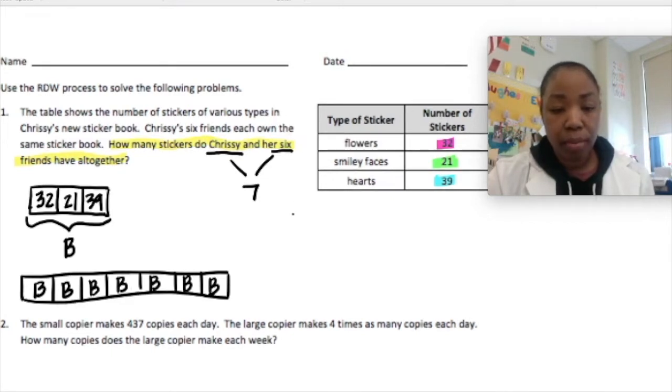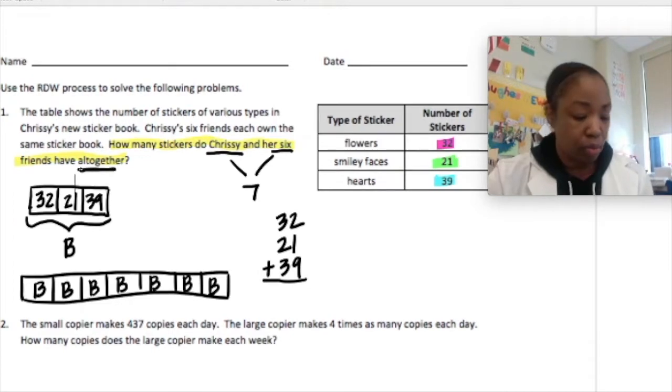So we're going to do whatever that one book is seven times. Let's figure out what that one book is. 32, 21, and 39. We're putting the stickers all together, right? So I'm going to add. 2 plus 1 plus 9 is 12. I'm going to write 2 and regroup 1. 3, 2, and 3. 3 and 3 is 6 plus 2 is 8 plus 1 is 9. So one book is 92 stickers.